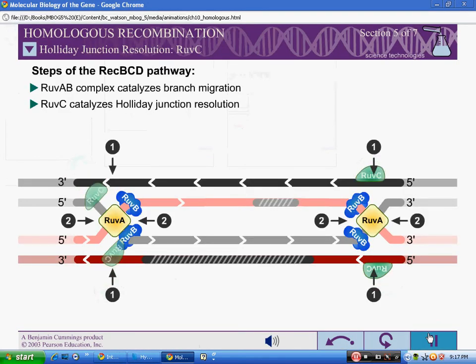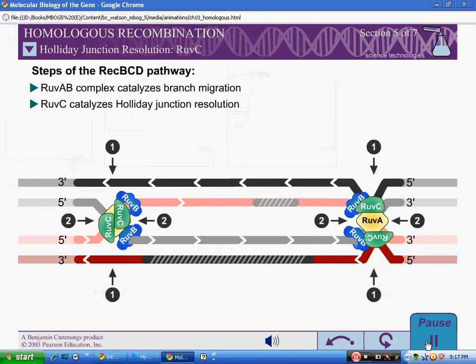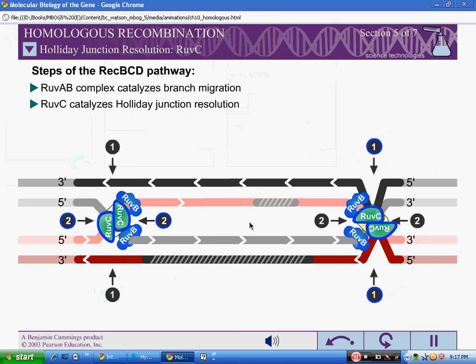Splice recombination products also result if the first junction is cleaved at site 2 and the second junction is cleaved at site 1.